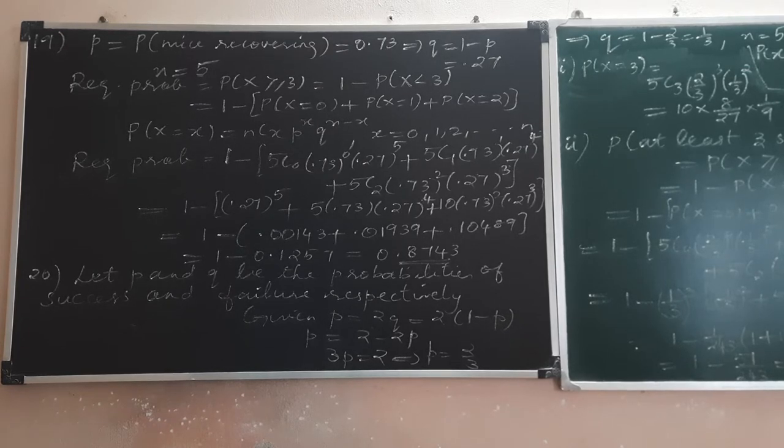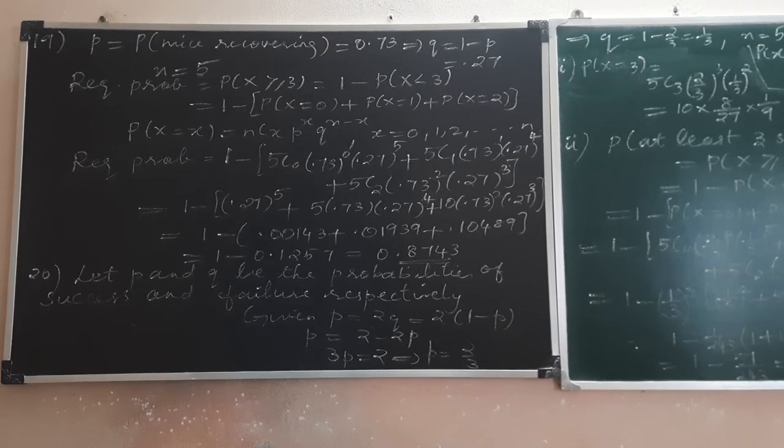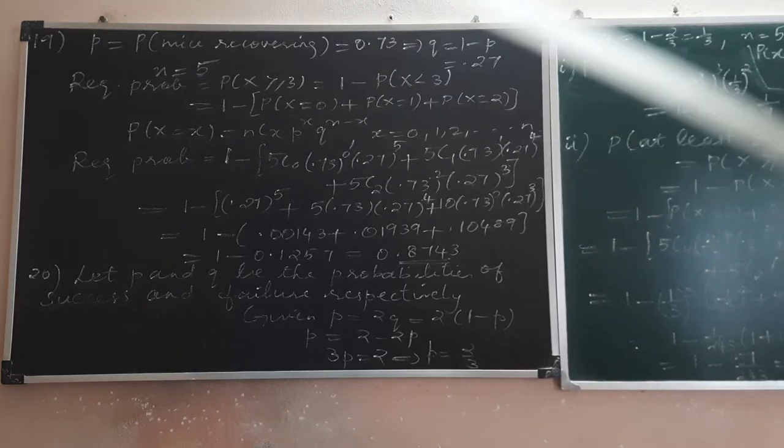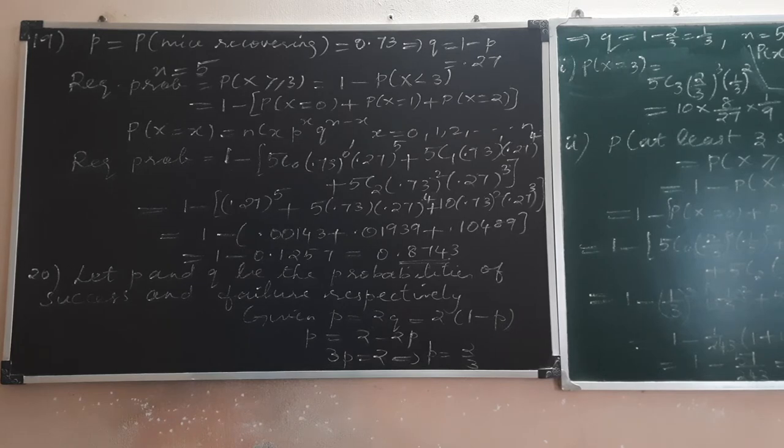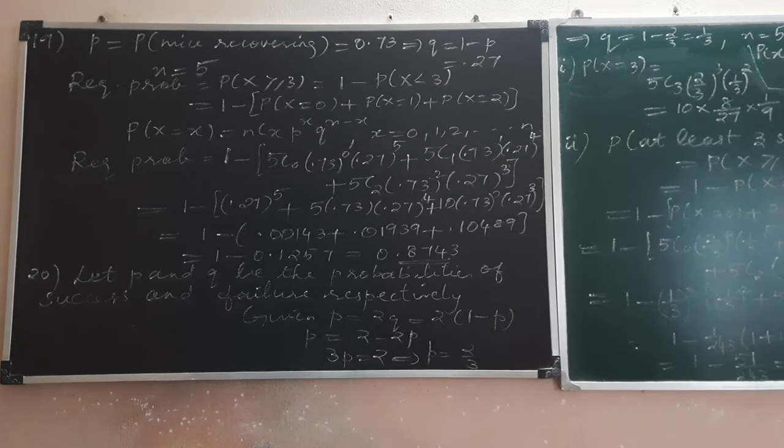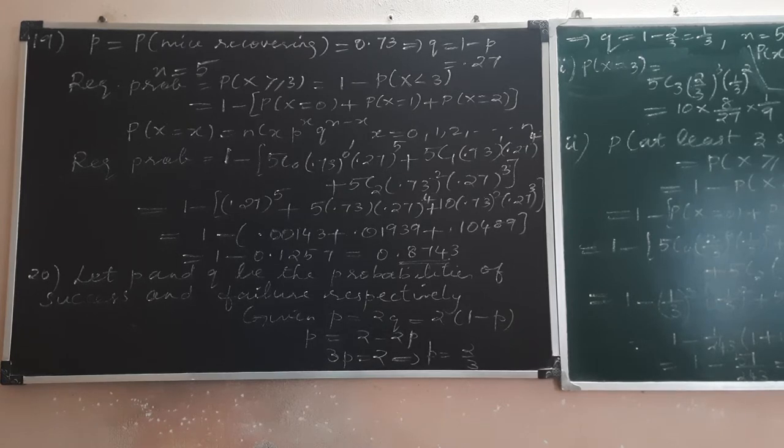Assume that the probability of recovery is 0.73. What is the probability that at least 3 of the mice recover? So here small p is the probability of success that mice recover, that is 0.73. Q is the complementary probability 1-P, that is 0.27. The number of trials is 5 mice.